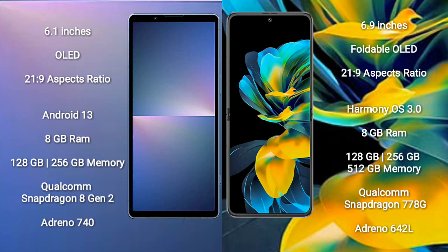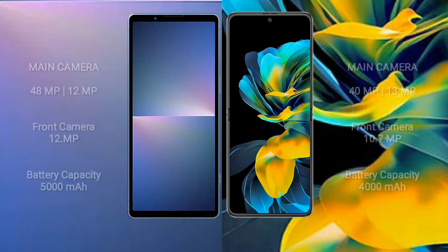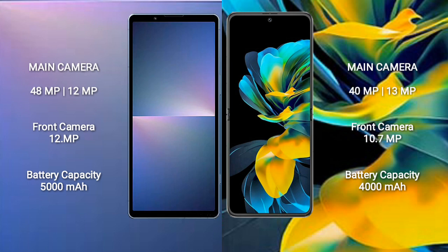Huawei Pocket S comes with 8GB RAM and 128GB to 512GB internal storage, a Qualcomm Snapdragon 778G processor, and an Adreno 642L GPU.